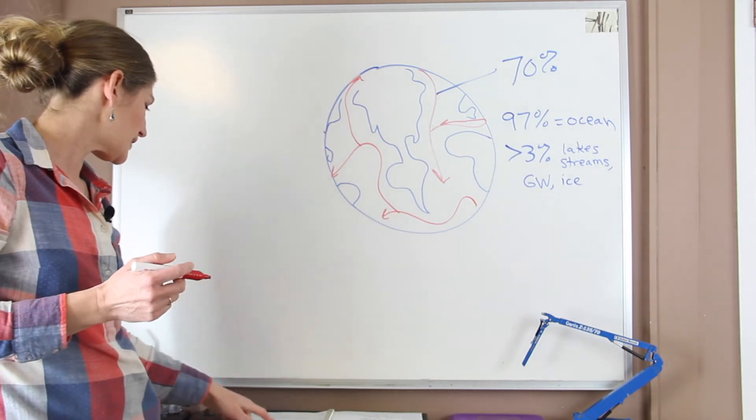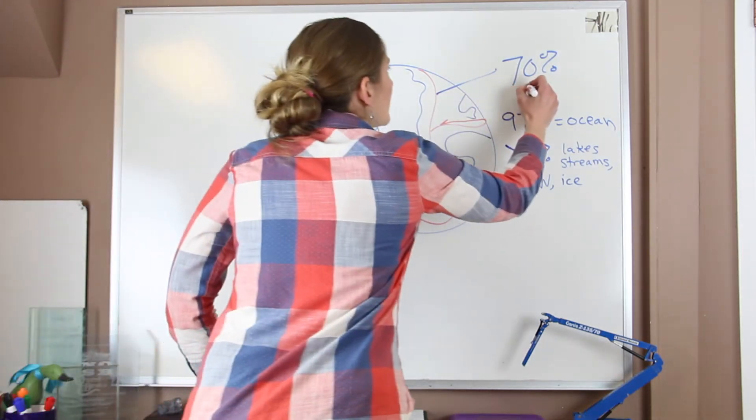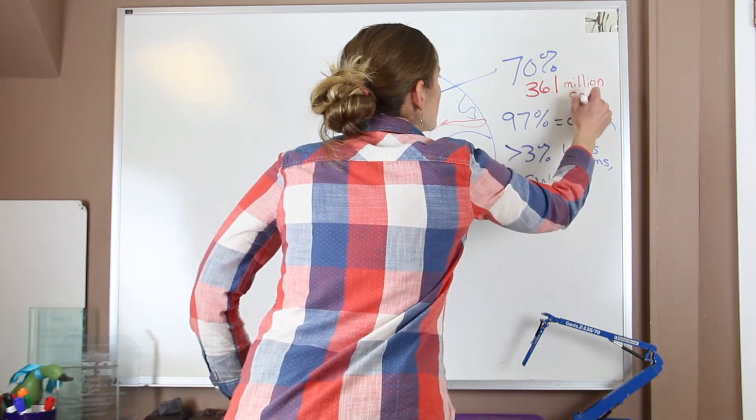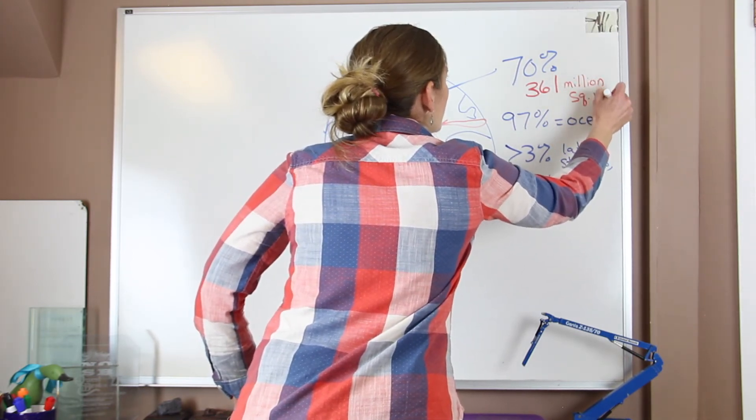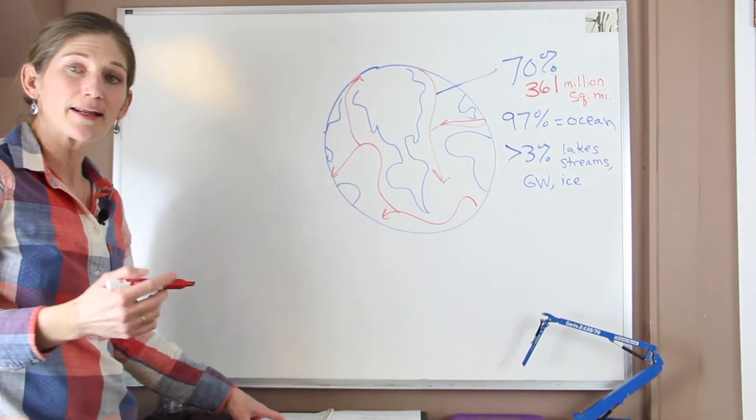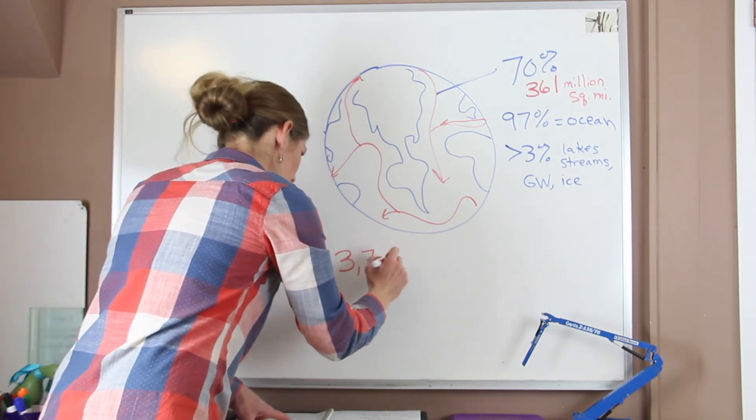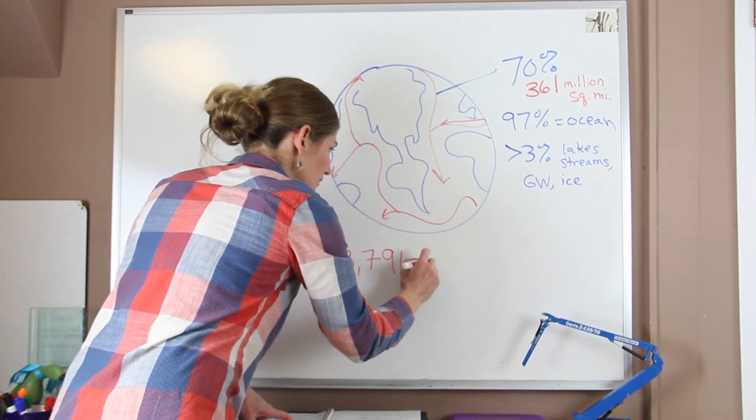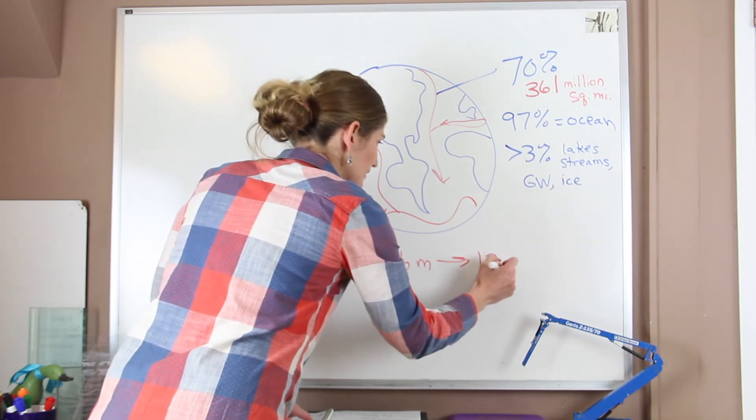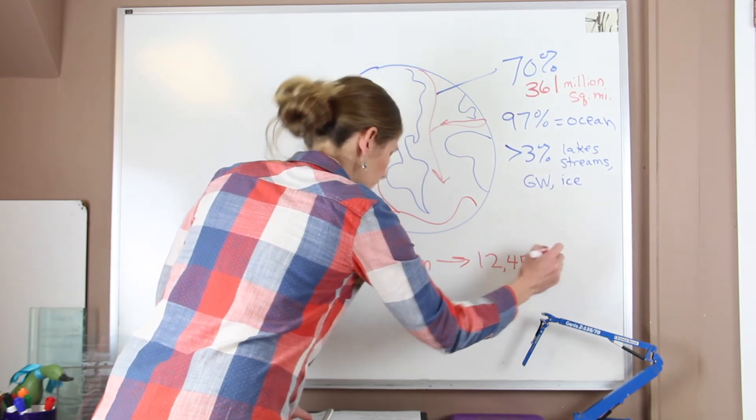We said before that the ocean is, or the earth is 70% water. If you want to keep this in mind, that is 361 million square miles. Okay, so it's very big. If we want to look at the depths of the ocean, on average, the average depth is 3,796 meters. And if meters are not your thing, you need to put that in perspective, that is 12,451 feet.